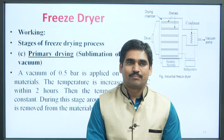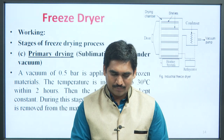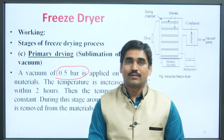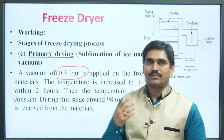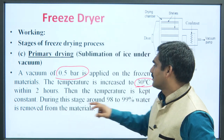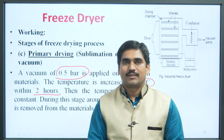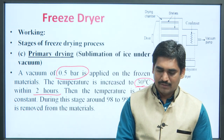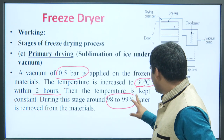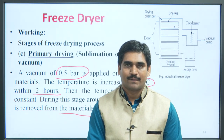The next stage is primary drying — that means sublimation of ice under vacuum. A vacuum of 0.5 bar is applied on the frozen material. Due to this, the temperature is increased to 30 degree Celsius within 2 hours. After that, the temperature is kept constant, and during this stage around 98 to 99 percent of water is removed from the materials.